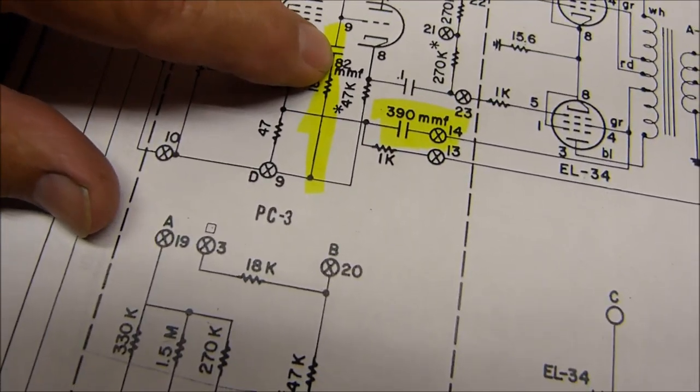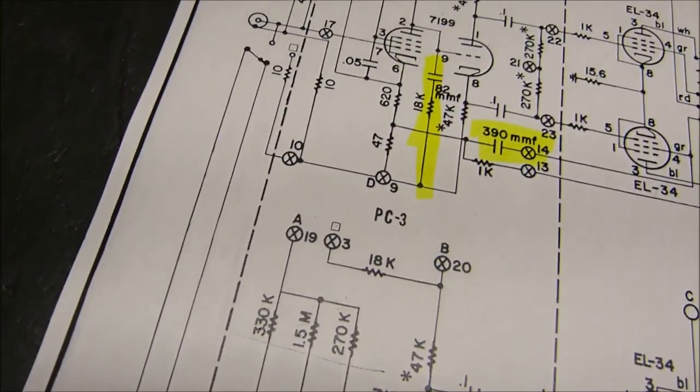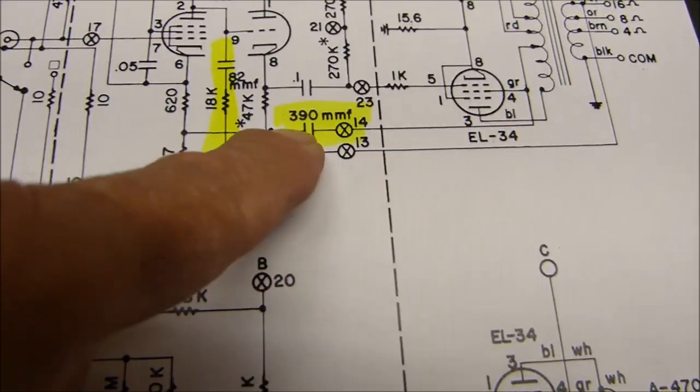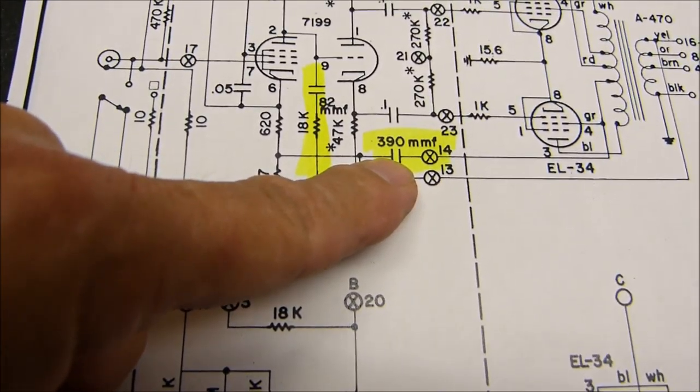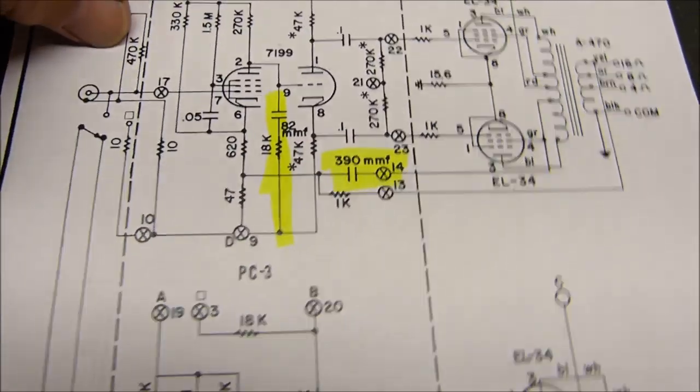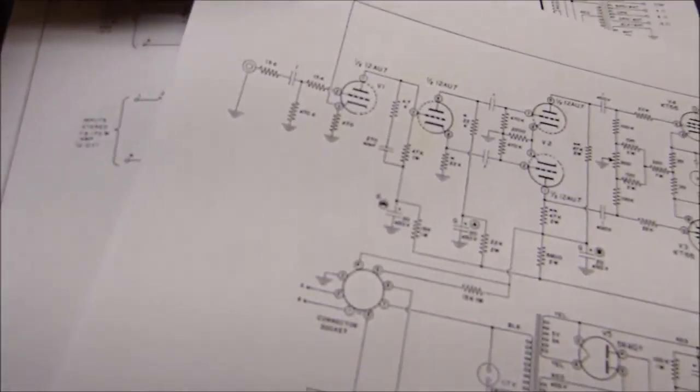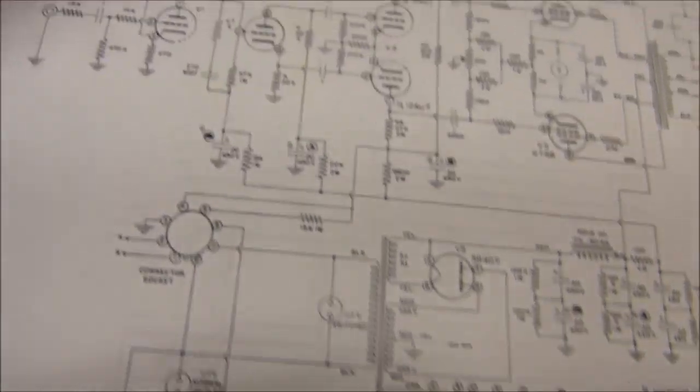Look at this 82 picofarad and 18k. Looks just like that Fisher we just looked at. Then we've got that 390 coming back just like the other Dynakit. This is the ST70.